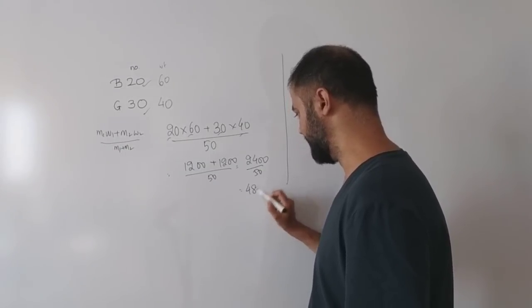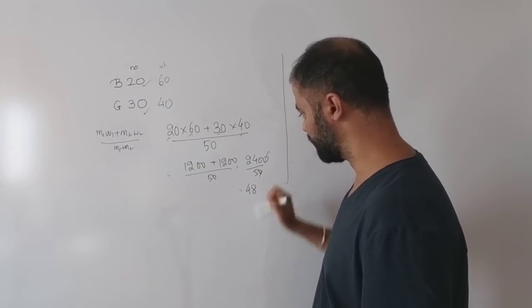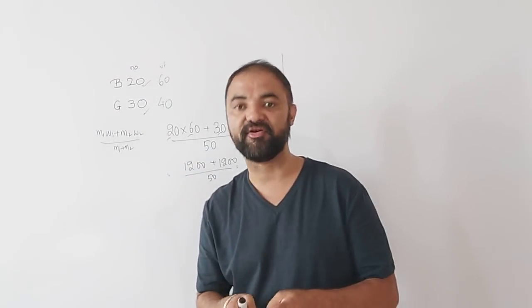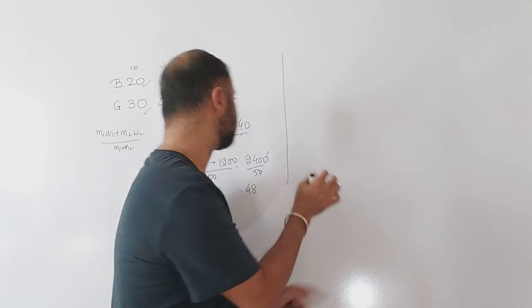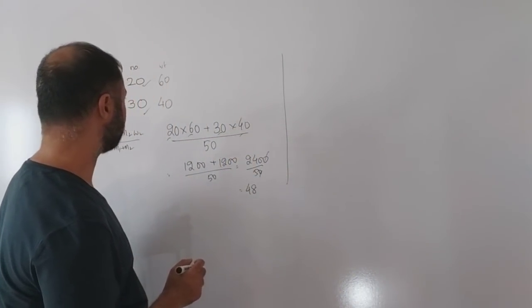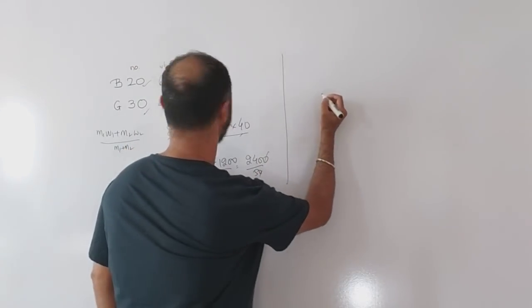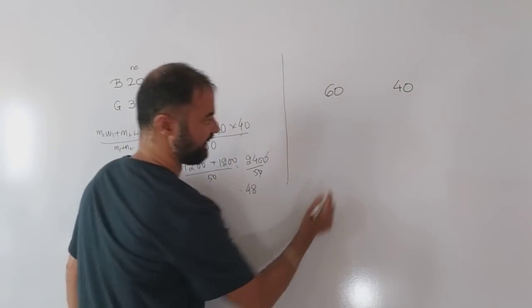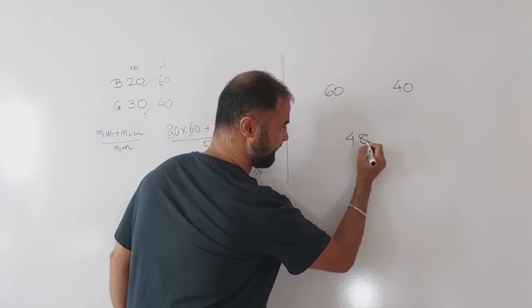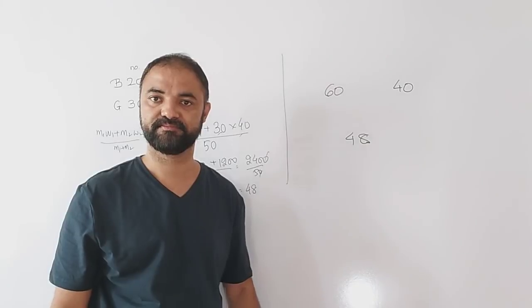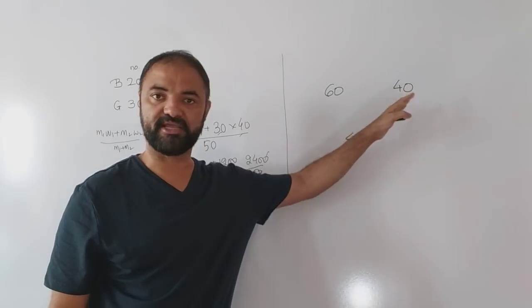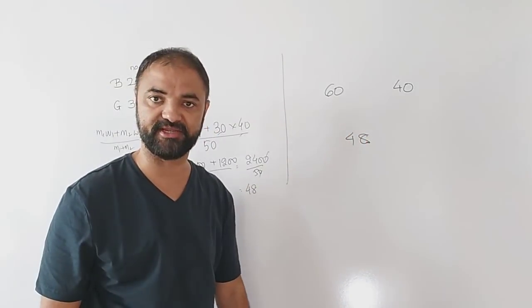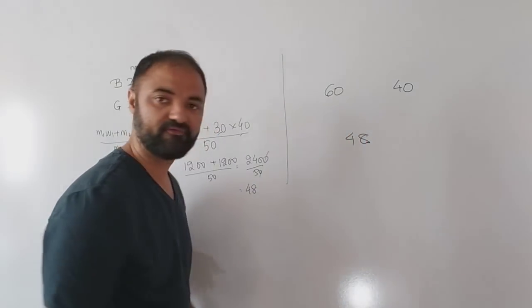Now the same question in reverse: if the weight of boys is 60, weight of girls is 40, and their average weight is 48, find the ratio of boys and girls. From a common sense point of view, if the average is 50, both numbers are equal.